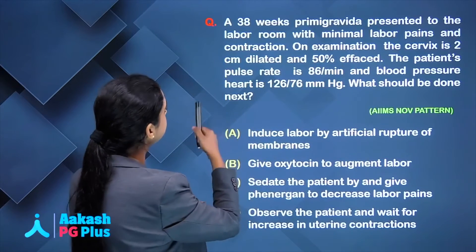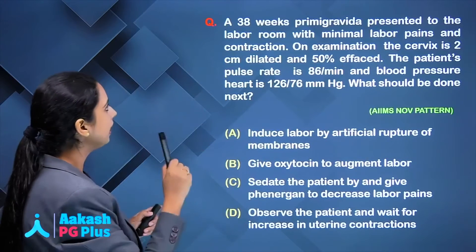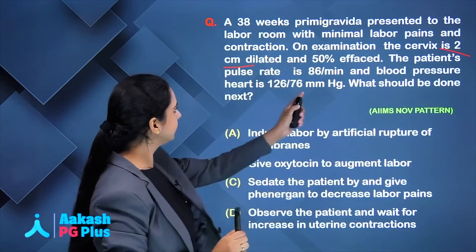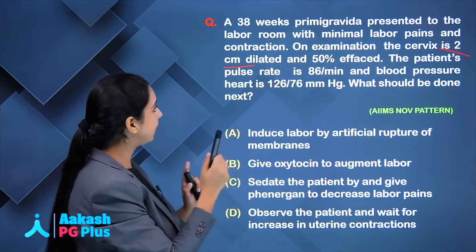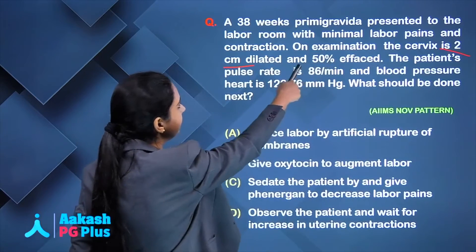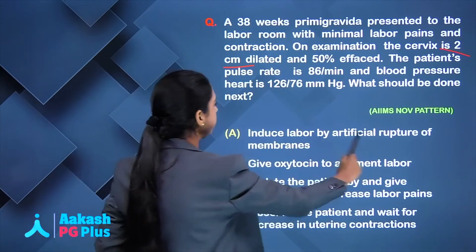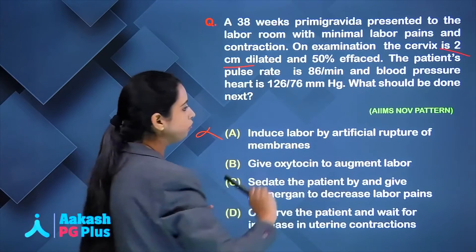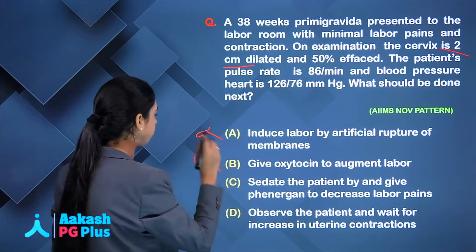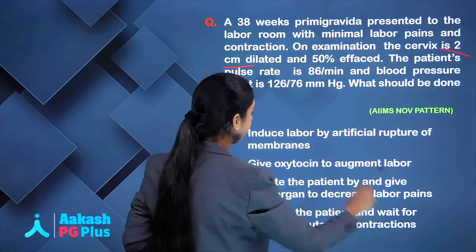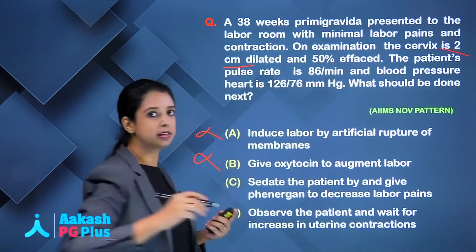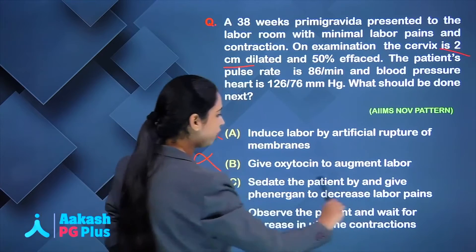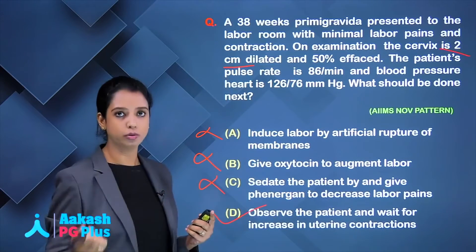Next question: a 38-week primigravida presented to the labour room with minimal labour pains and contractions. Examination shows cervix 2 cm dilated and 50% effaced. Vitals are stable. She is in latent phase with minimal pain. Will you do ARM? No, never in latent phase. Give oxytocin? No need. Sedate the patient? The labour pains are minimal and she is not bothered. The answer is: observe the patient and wait for increase in contractions.